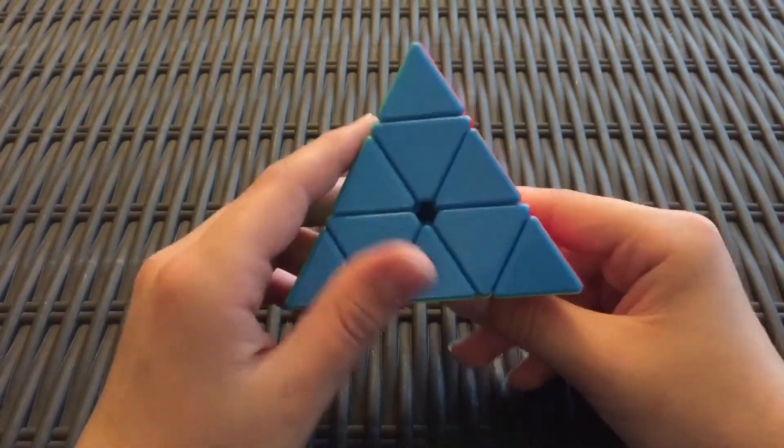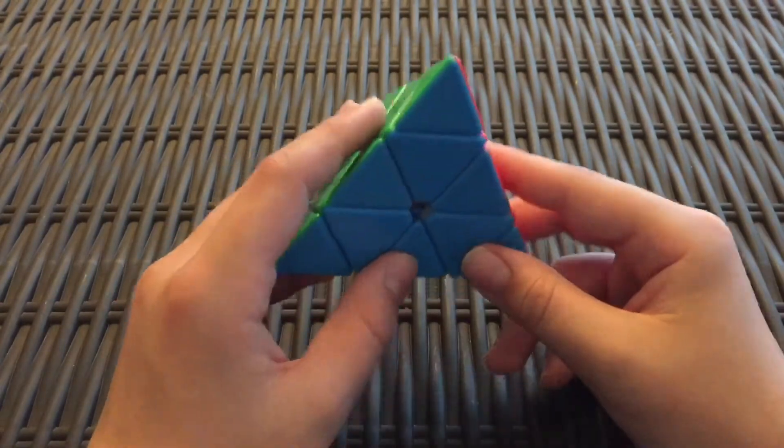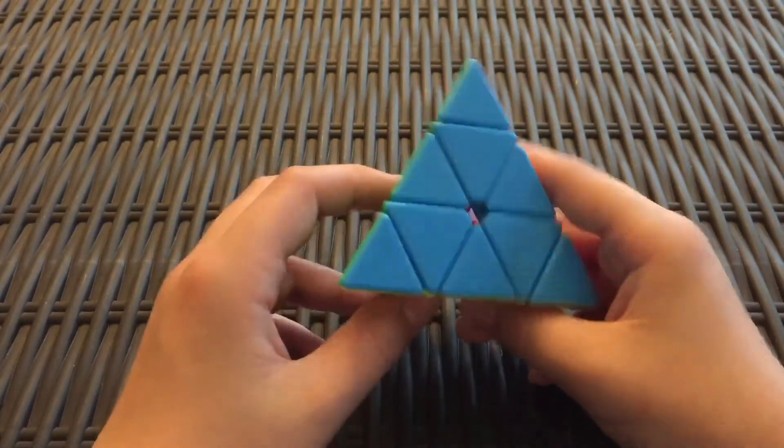The last thing about Pyraminx notation is the faces. These don't have official names, but this is what people generally call them. Again, it's similar to 3x3.